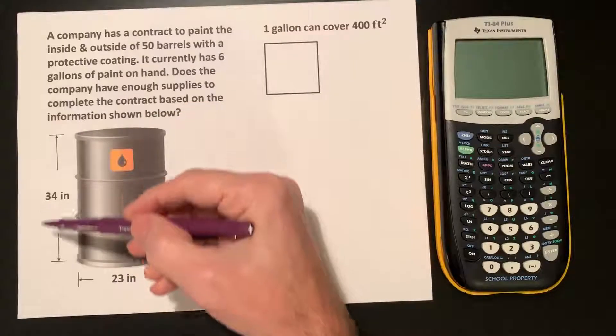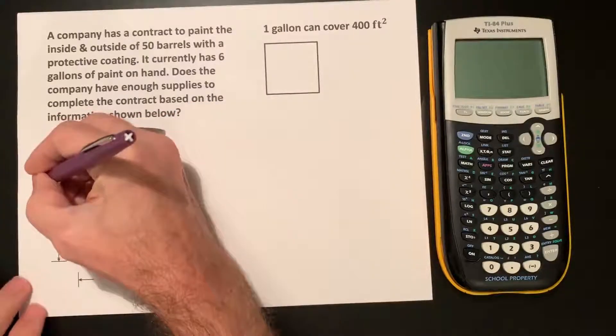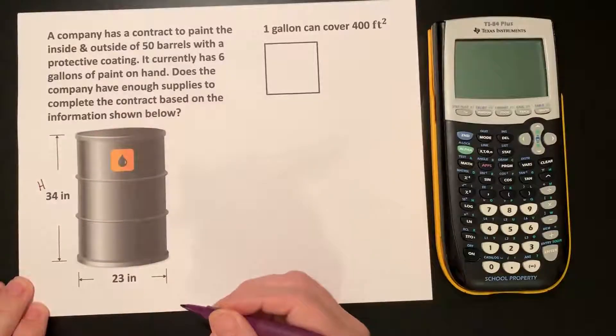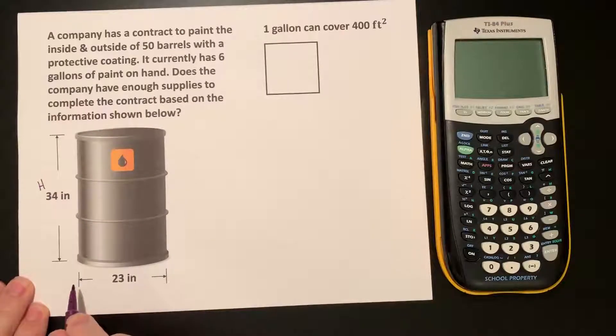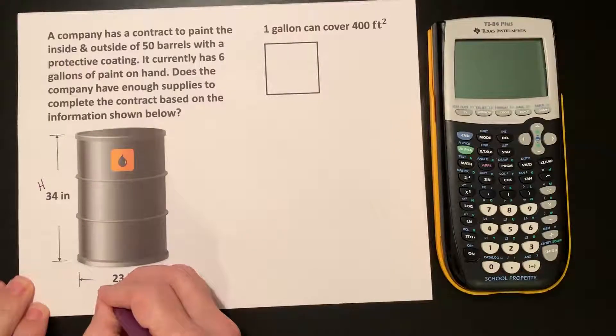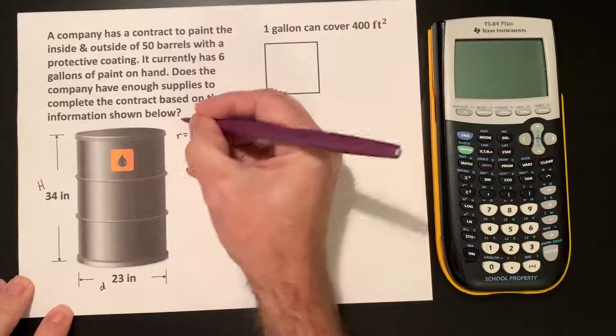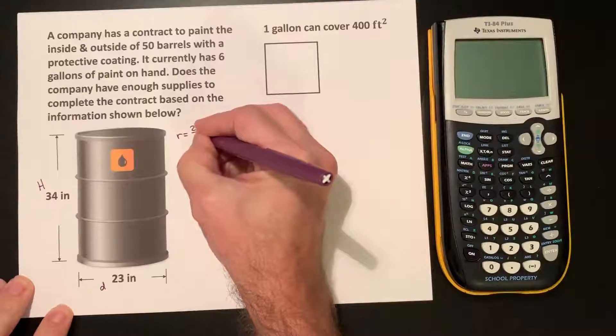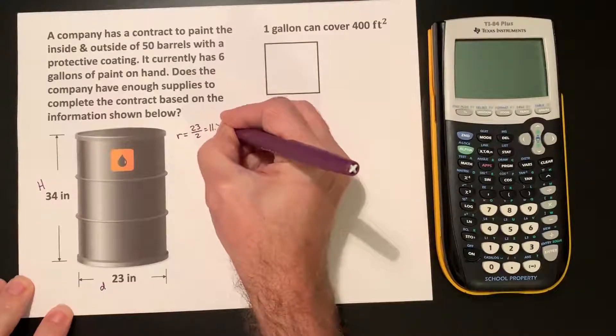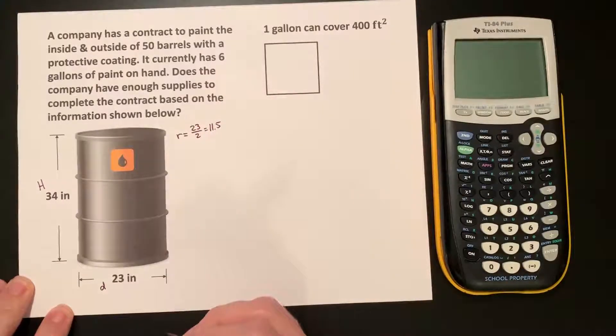The barrel is 34 inches in height. This is the height, H. It has a diameter of 23 inches. This, of course, means that the radius is half of that, which is 11.5 inches.